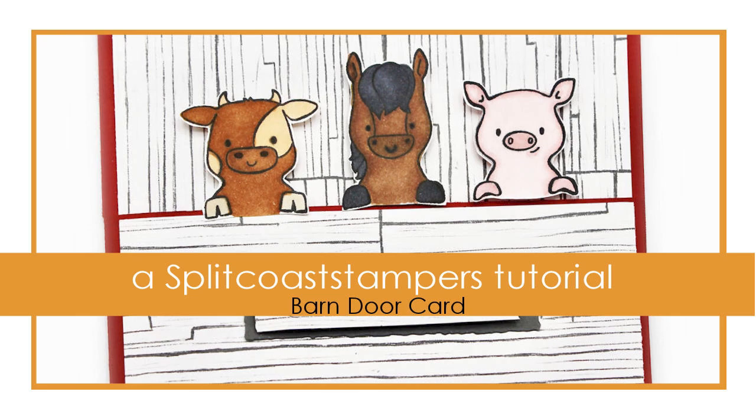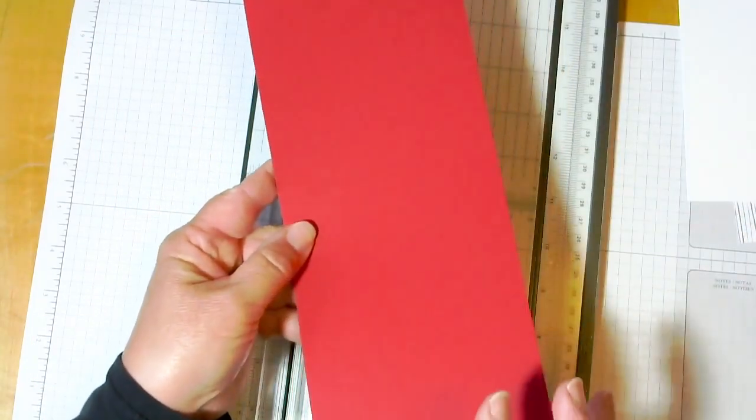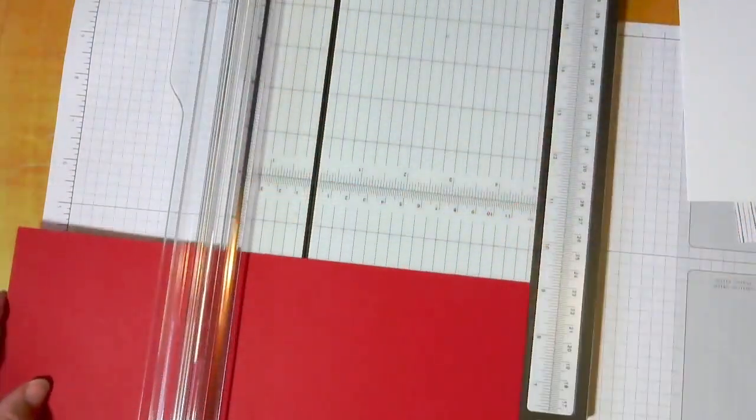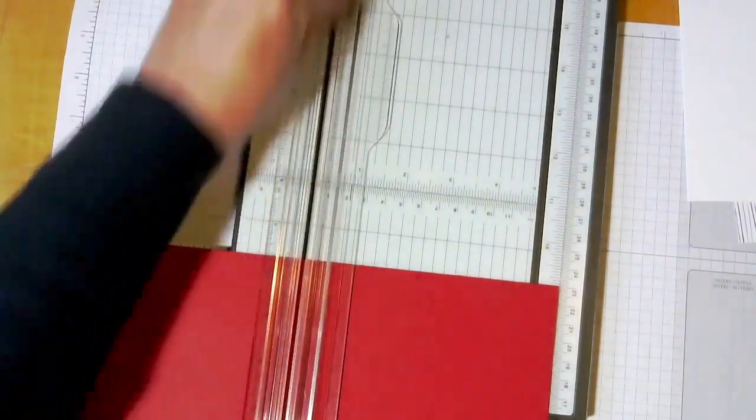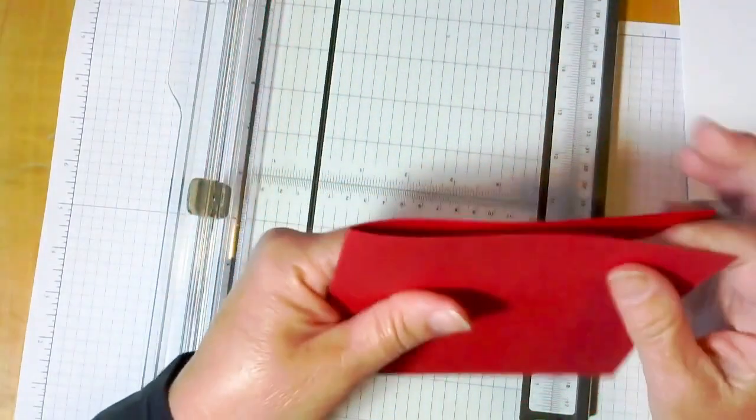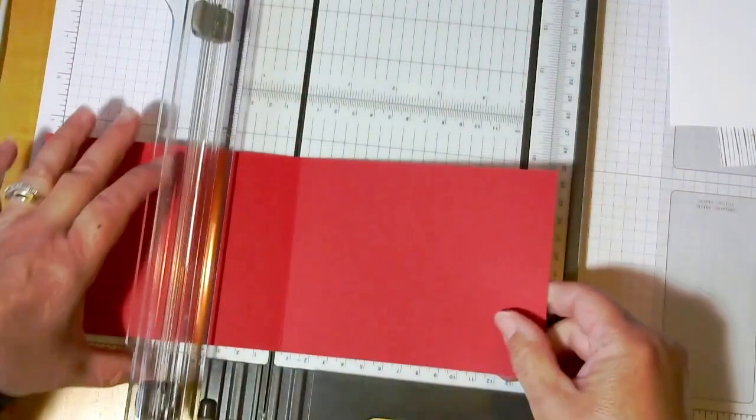So we're going to start with a piece of cardstock that's been cut in half the long way, so it ends up being 4 1/4 by 11, and we're going to score it at 5 1/2, so we'll score it in the middle, and then you can go ahead and fold that.